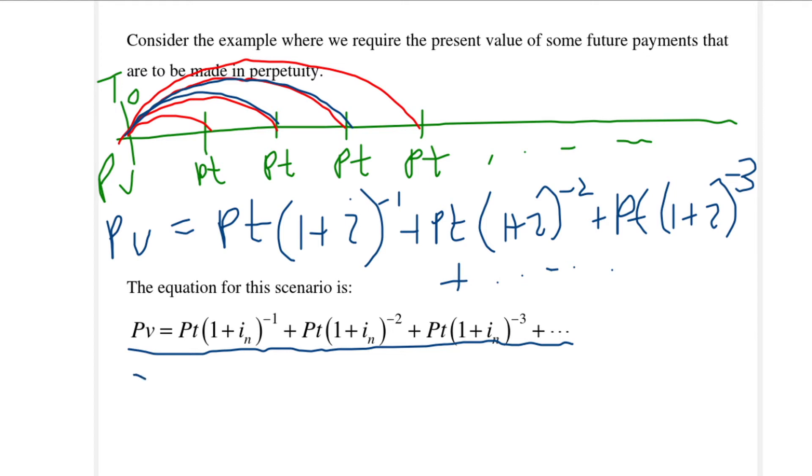Remember a geometric series is of the form A, A R, A R squared, and so forth. If we are interested in the sum of an infinite geometric series, the sum of an infinite geometric series is equal to A over 1 minus R and this R must lie between minus 1 and 1 for this geometric series to converge.